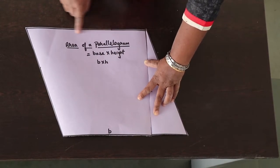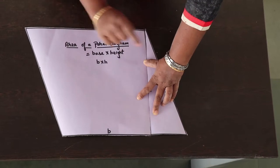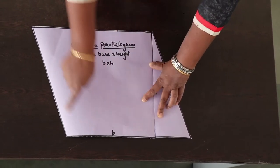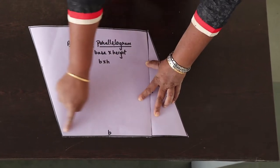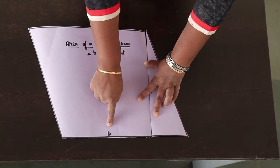Now initially I start with a parallelogram. This shape is a parallelogram whose height is h and whose base is b.